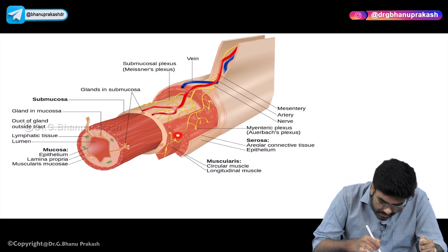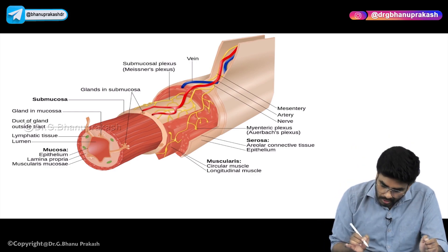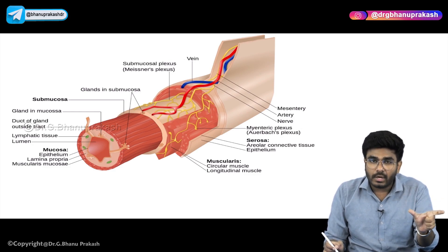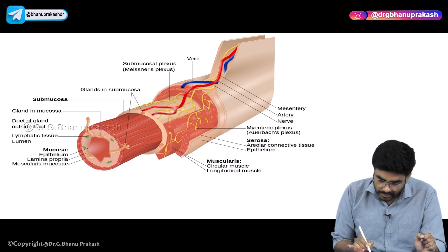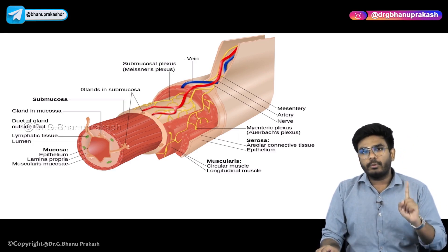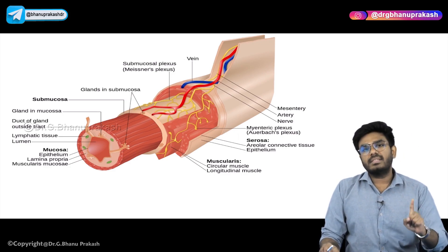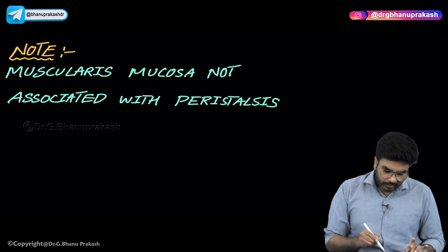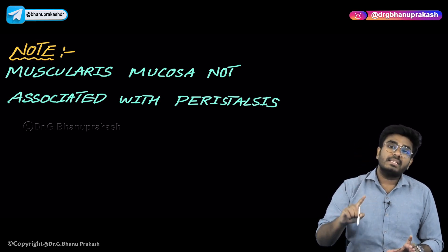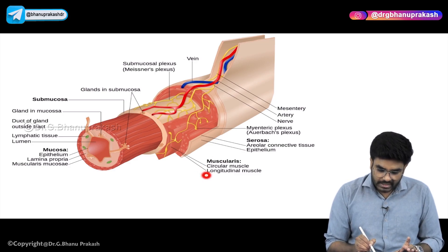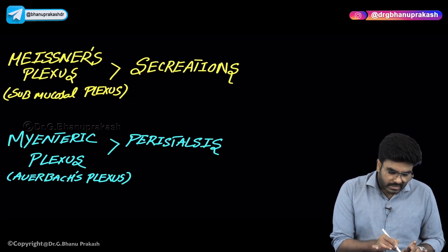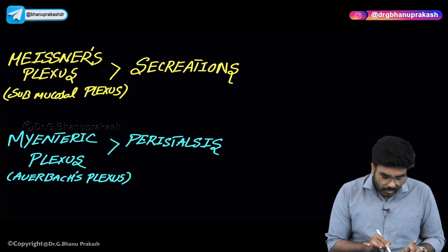There is also a plexus going to the muscularis layer called the myenteric plexus or Auerbach's plexus. 'Myo' means muscles, so this plexus innervates muscles and helps in GI motility. The two key take-home points: submucosal plexus or Meissner's plexus helps in GI secretions; myenteric plexus or Auerbach's plexus helps in GI motility. Always remember — muscularis mucosae is not associated with peristalsis; it's the muscularis propria with circular and longitudinal muscles that helps in GI motility.